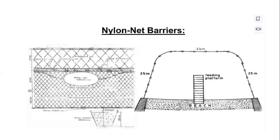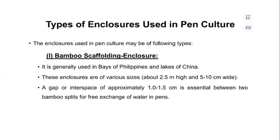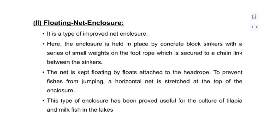There are different types of enclosures that can be used in pen culture. The first is the bamboo scaffolding enclosure, which is generally used in the bays of the Philippines and lakes of China. These enclosures are of various types, about 2.5 meters in height and 5 to 10 centimeters wide. A gap or interspace of approximately 1 to 1.5 centimeters is essential between two bamboo slits for free exchange of water in the pen.